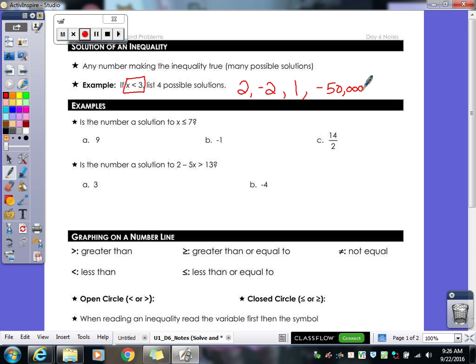So let's practice a little bit more. We have this inequality here. x is less than or equal to 7. They want to know if a, b, and c are solutions to that inequality. So is 9 less than or equal to 7? No. So 9 would not be part of that solution set as we call it. Is negative 1 less than or equal to 7? Yes. So negative 1 would be part of our solution set.